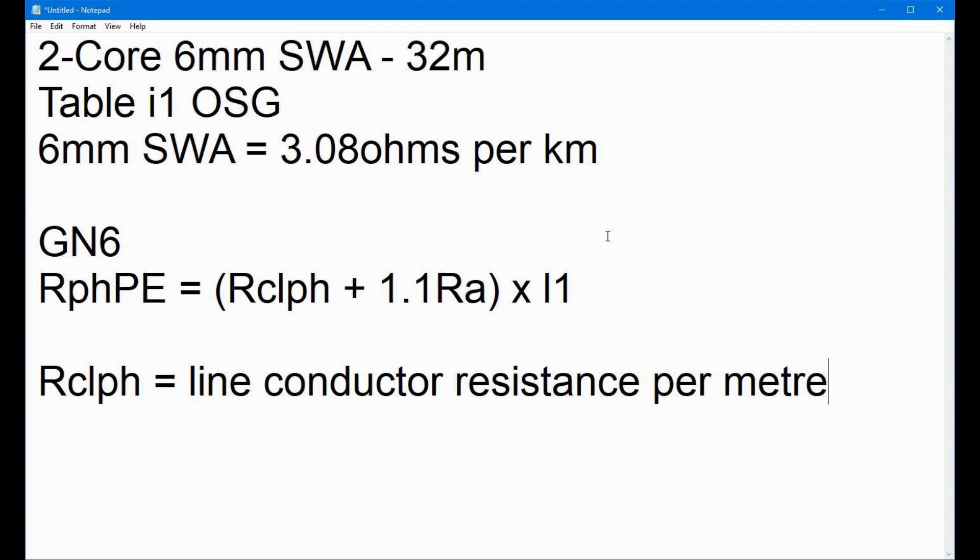So, we have to change the 3.08. We have to change that value there to be metres. So, in this particular case, what that means is that that value is going to be 0.00308 ohms. So, that gives us the value for the 6mm conductor. Now, we know what L1 is. Well, we don't. L1 is the circuit length. Now, in this case, we know that that's going to be... That's the circuit length, which we know is 32 metres. At least that's straightforward. So, what the heck is Ra, you might be asking.